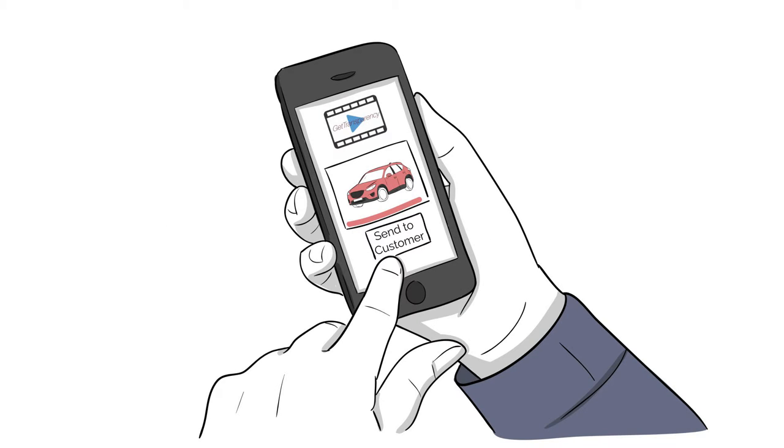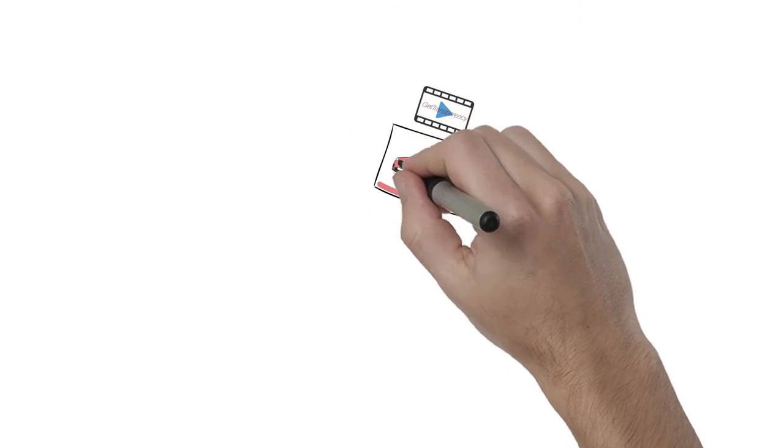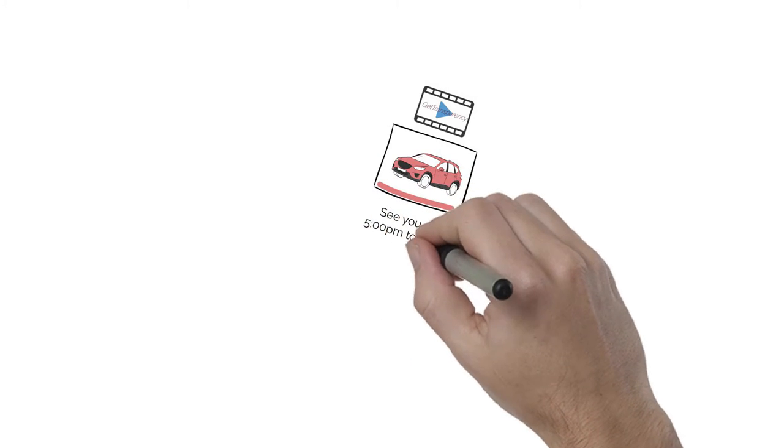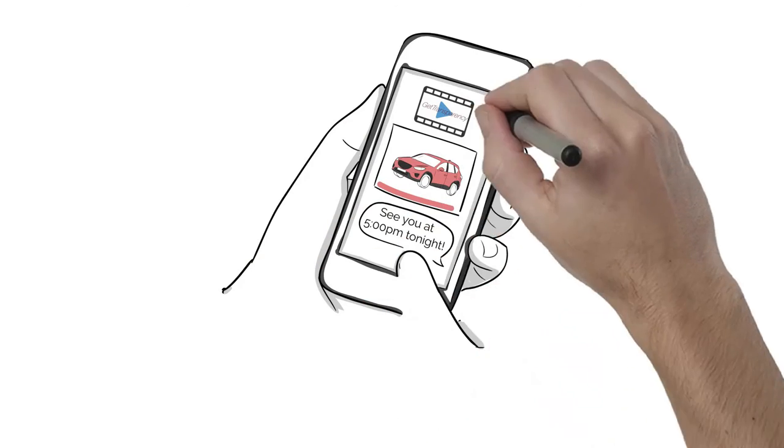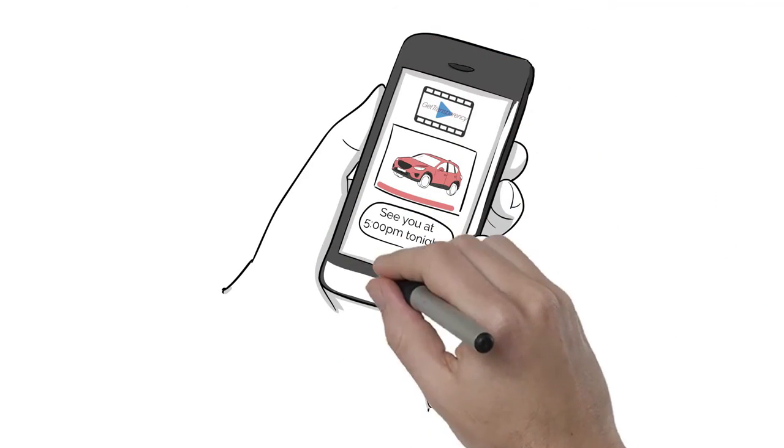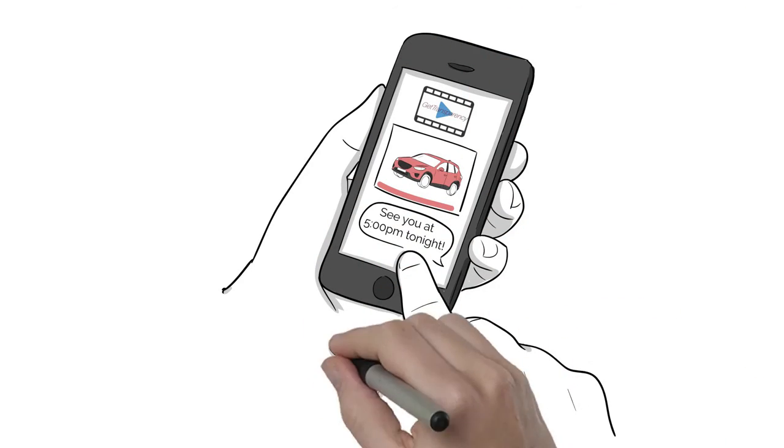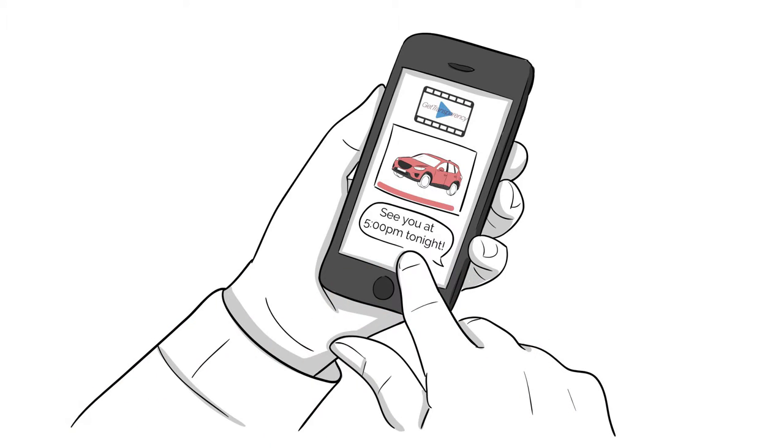The sales agent sends the video to the customer. Michael receives the message and clicks play. He says, ah, now that's helpful. I can see the car on the dealer's lot and it has the options I want. There's no guarantee that those other cars are even available. With a quick text message reply, Michael can confirm a sales appointment.